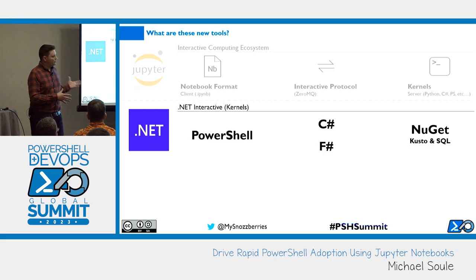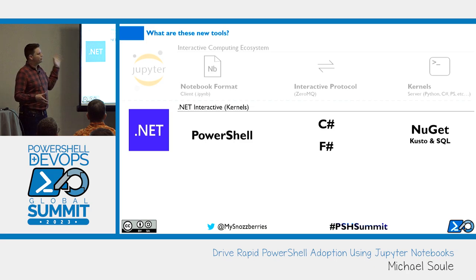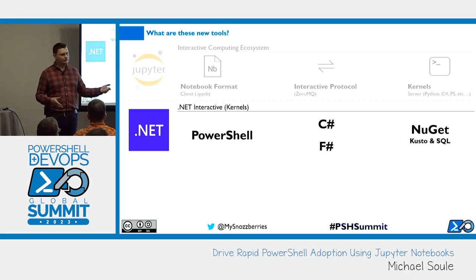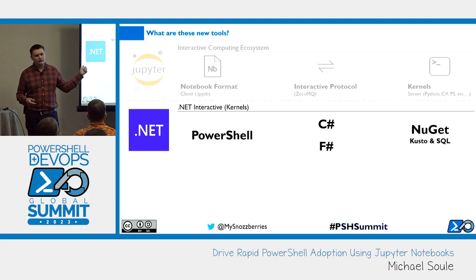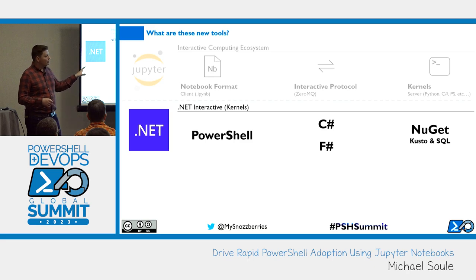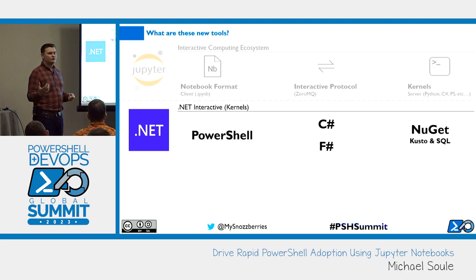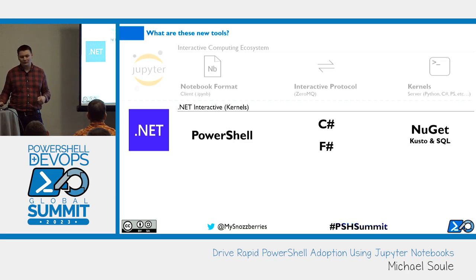By default, the Jupyter team themselves did not build a PowerShell kernel, but Microsoft did. The .NET Interactive team produced multiple kernels for Jupyter — everything from PowerShell to C# to F#, even including different packages through NuGet like Kusto and SQL. There's also HTML, JavaScript, and Mermaid, which is a graphical ability to produce from text a scalable vector graphic — an SVG file. So you can do dynamic documentation with even graphics.